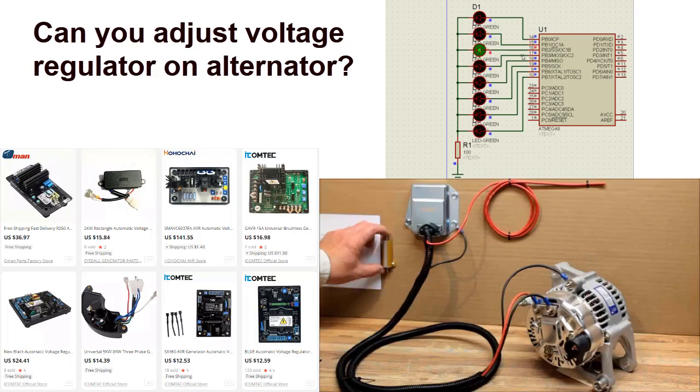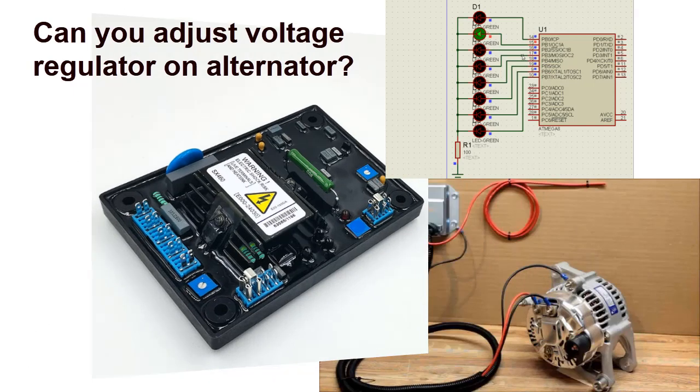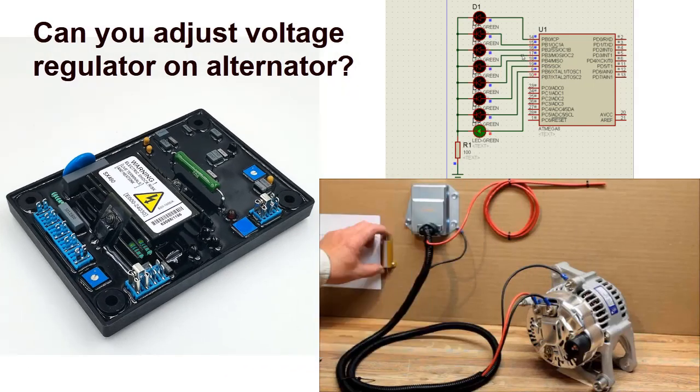The automatic voltage regulator directly correlates to the performance and longevity of your generator, as well as the items that the generator is providing power to, and ensures that the voltage output delivered will be consistent in its load current even if fluctuations were to occur in the background.